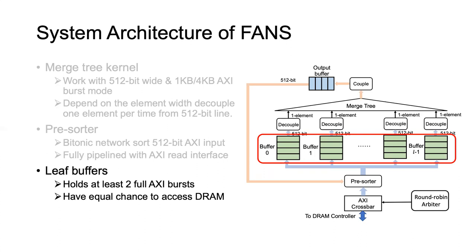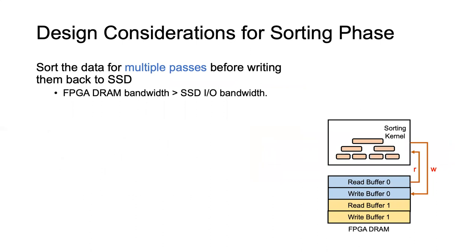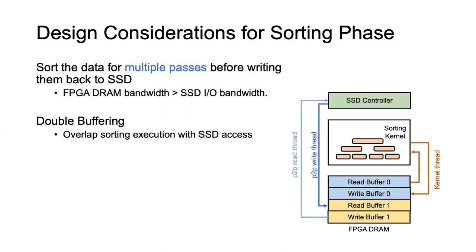Using the merge tree kernel in the sorting phase, a natural design choice is that we sort the data for multiple passes in the DRAM before we write them back to the SSD. Why? Because the FPGA DRAM bandwidth is much larger than the I/O bandwidth. For example, in the first pass the sorting kernel will read unsorted data from read buffer zero in the figure and write the partially sorted data into write buffer zero. In the next pass, the kernel will read partially sorted data from write buffer zero and write the longer partially sorted data into read buffer zero, and so on and so forth. Moreover, we also apply double buffering techniques to overlap the sorting execution with the SSD access.